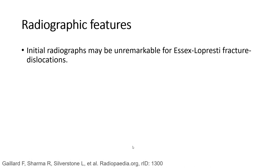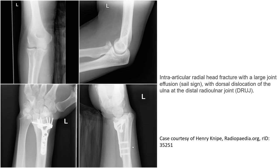Initial radiographs may be unremarkable for Essex-Lopresti fracture dislocation. This is an example of an intra-articular radiograph of a patient with a distal joint injury, showing dislocation and distal ruptured interosseous membrane.